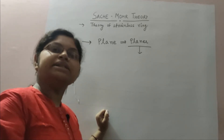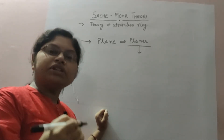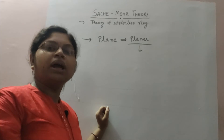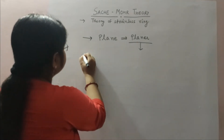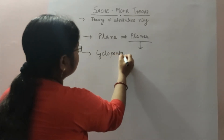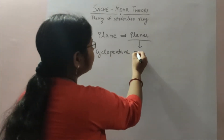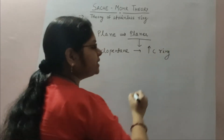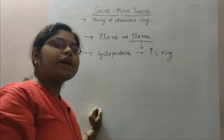Baeyer had already considered that cyclopentane is the most stable ring — more stable than cyclohexane — but this is practically not the case. If we see practically, cyclohexanes are more stable than cyclopentane. According to Baeyer, cyclopentane is the most stable, and when the number of carbons in the ring increases, those rings have negative strain, so they cannot exist in nature.